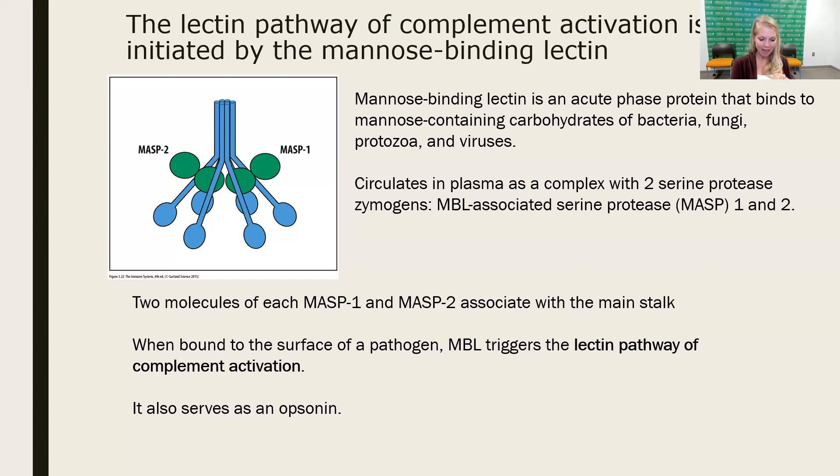When it's bound to the surface of a pathogen, then mannose-binding lectin will trigger the lectin binding pathway of complement activation. And because it can, it's also going to serve as an opsonin. There are receptors that can recognize mannose-binding lectin and internalize it for phagocytosis.